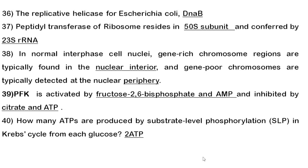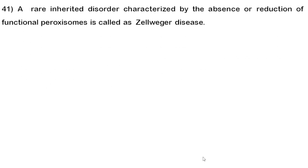You need to know the energetics of different biochemical pathways. Forty-first question: the rare inherited disorder characterized by an absence or reduced function of peroxisomes is called Zellweger disease. Also, be ready to answer which disease is due to non-functional mitochondria.